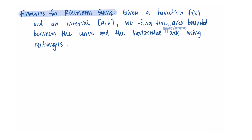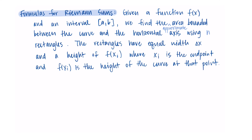Given a function f(x) and an interval a to b, we can find the approximate area bounded by the curve and the horizontal axis using rectangles. The rectangles will have equal width Δx and a height of f(x_i), where x_i is the endpoint of the rectangle we're using. f(x_i) is the height of the curve at that point — we take an input on the x-axis and find the corresponding output, which is the height of the rectangle.